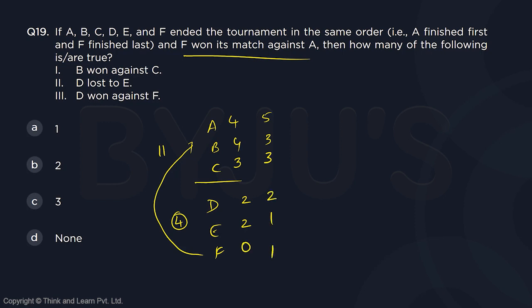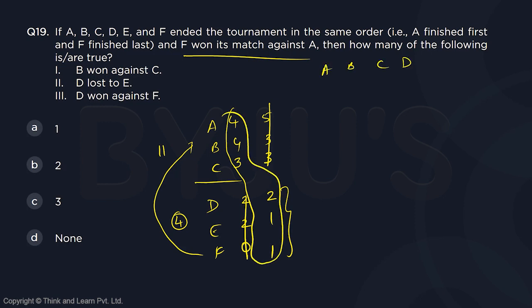However, since F is already winning one match against A, the 2, 2, 0 case is not possible — F cannot be 0. So the only possibility for the bottom is 2, 1, 1. Also 5, 3, 3 is not possible because A is losing one match so A cannot get 5. Therefore there is only one arrangement: A gets 4, B gets 4, C gets 3, D gets 2, E gets 1, F gets 1.